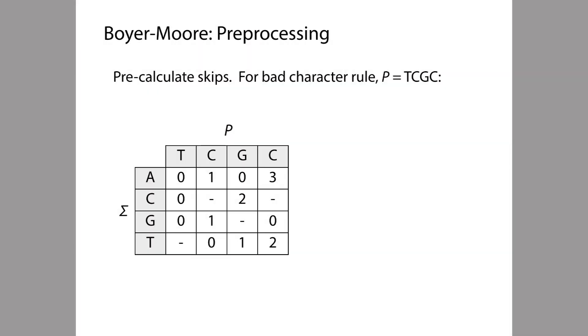We have to address now one last detail, which is that in order to use our rules, the bad character rule and the good suffix rule, we need to be able to look up how far the rules tell us to skip.